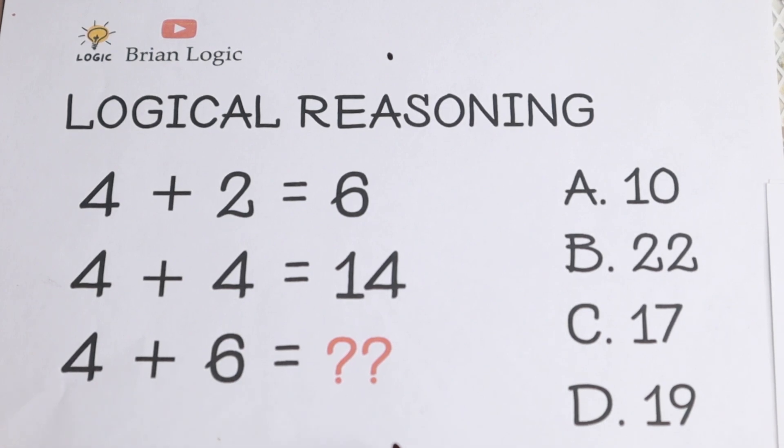We have that 4 plus 2 equal to 6, 4 plus 4 equal to 14, and we need to find the last row. We have 4 plus 6 equal to... and we need to find this answer.